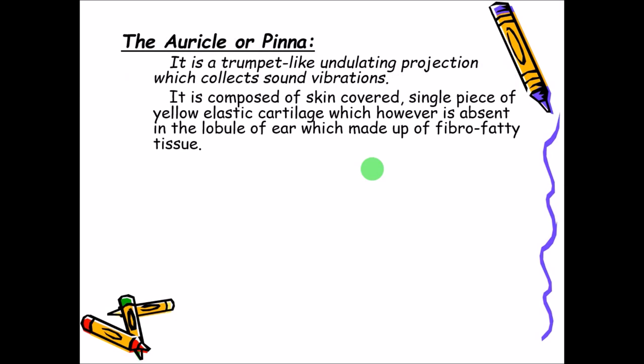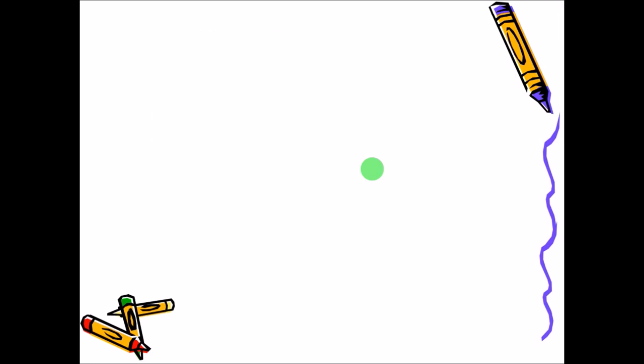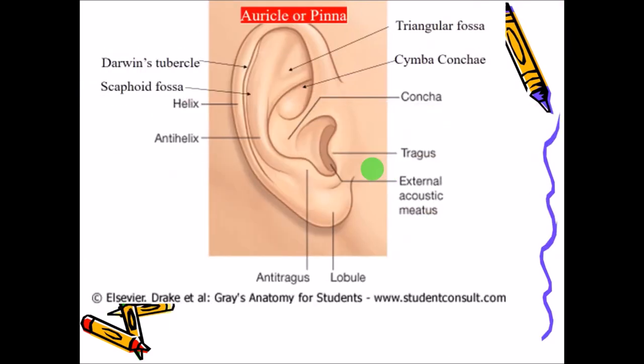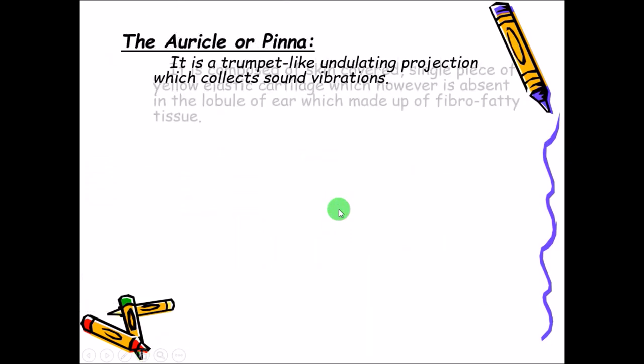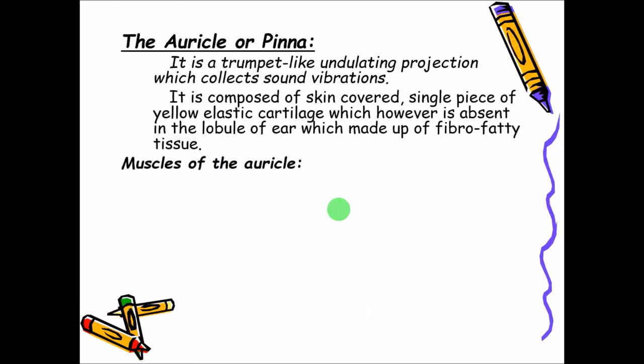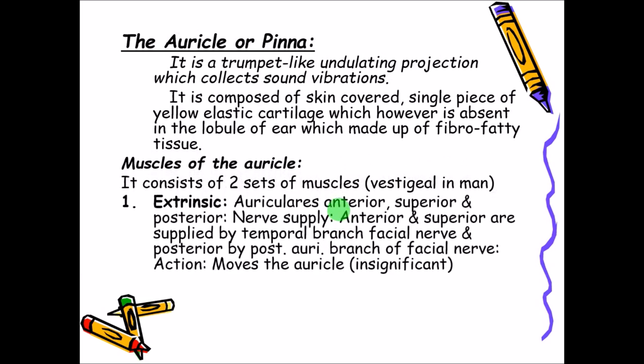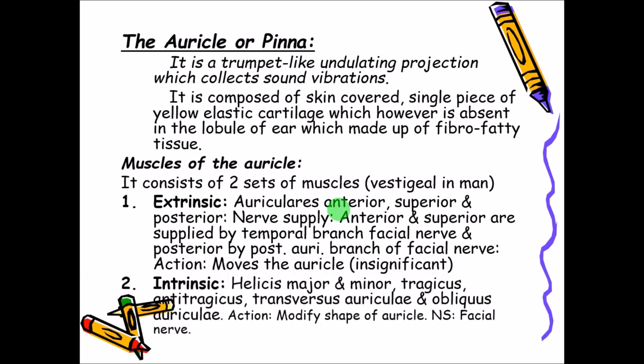Because the auricle is made up of elastic cartilage, you can bend and turn it, except for the lower part — the lobule — which is made up of fibro-fatty tissue. There are muscles of the auricle, two sets which are mainly vestigial in humans: the extrinsic and intrinsic.